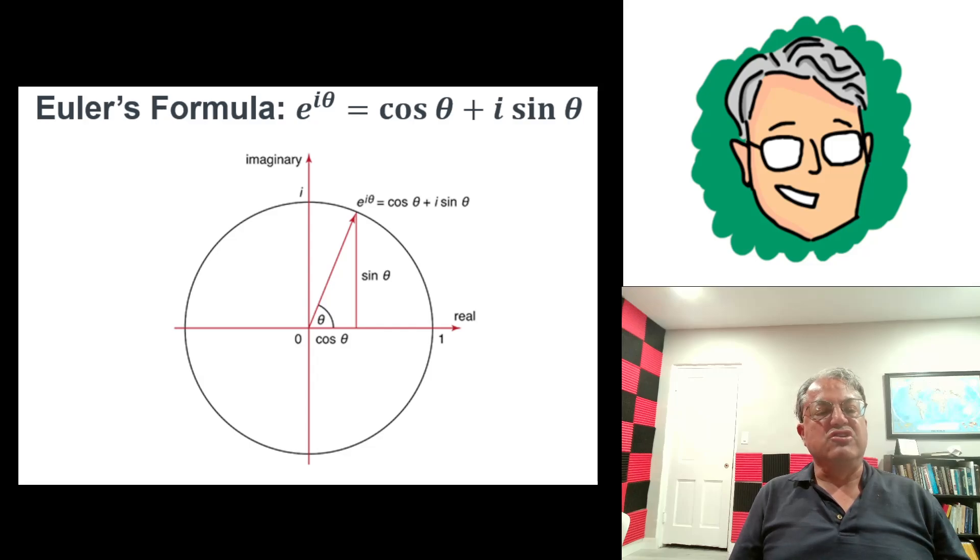You can think of this number cosine θ plus i sine θ as just a point on the unit circle on the complex plane. So this picture shows the unit circle on the complex plane.